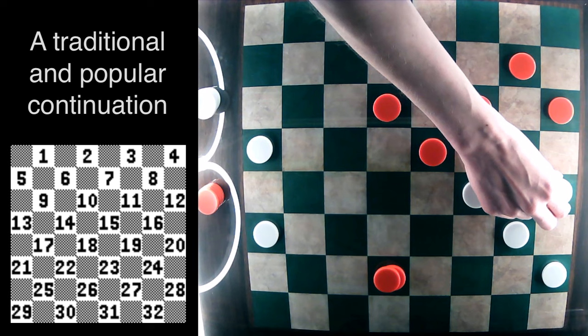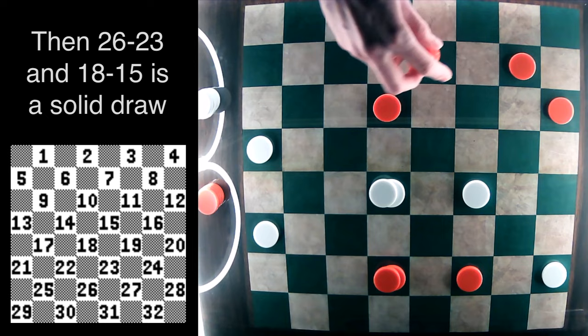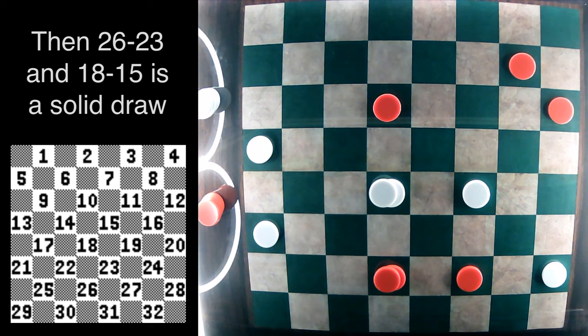But instead, it's probably just best to concede the draw here by going 20-16. So red is going to jump twice. And the white king is going to jump twice for an even drawable position.